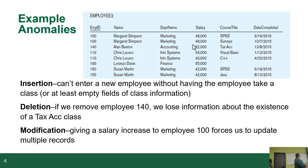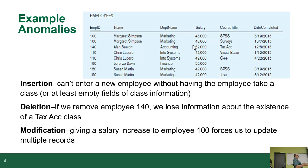A modification anomaly: Margaret Simpson did a really good job, so we decided to give her a raise. The problem is that we'd have to update two records to give her a raise. With today's computers they're pretty fast, so some of these anomalies aren't as catastrophically bad, but back in the day when computers were really slow, imagine the computer crashes after updating the first row — power outage, server crash. Suddenly we have two versions of Margaret Simpson with two different salaries. That's a modification anomaly — if we have to modify something in multiple places, that's bad. The goal of normalization is to avoid all three of those situations.